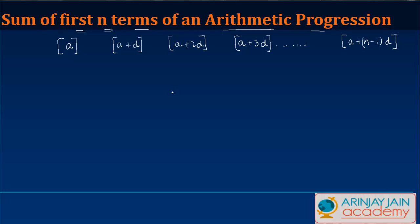It could be a case where you have just a few terms in the AP, or it could be a case where you have a large number of terms. Now if you have to find out the sum of all these terms, how do you do that? Let's call this S, and we say S is equal to a plus a plus d plus this plus this and so on.